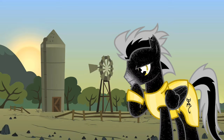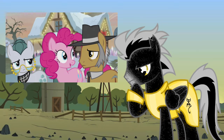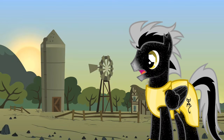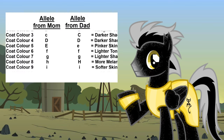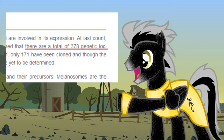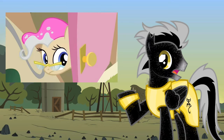So going by this alone, Pinkie Pie would have had to inherit a whole bunch of recessive genes from two parents with a whole bunch of heterozygous pairings — this seems very unlikely. However, genetics are a lot more complicated than that. Most, if not all, traits are determined by multiple genes. For example, more than 300 genes or allele pairings are responsible for skin color.